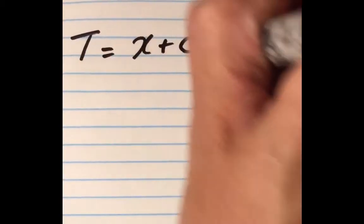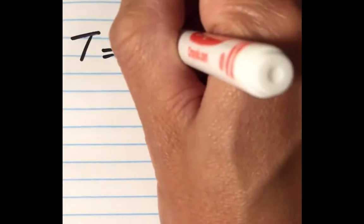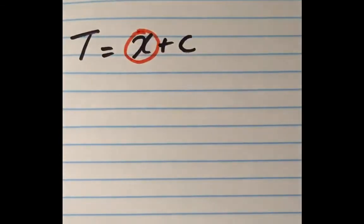For example, take a look at this equation, t equals x plus c. Let's say that we're trying to isolate the variable x, which we'll identify or highlight by circling red.